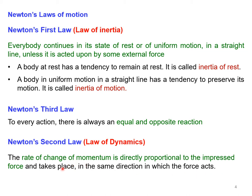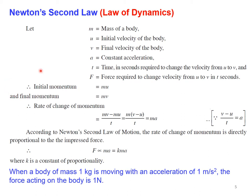Momentum is the product of mass and velocity. For the derivation of Newton's second law, consider a body of mass m. Let u be the initial velocity, v the final velocity, a the constant acceleration, and t the time taken to change velocity from u to v. The force f is required to change velocity from u to v in time t seconds. Initial momentum is m·u and final momentum is m·v.